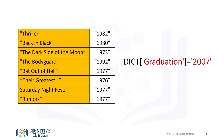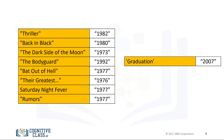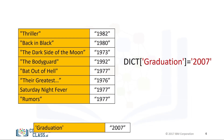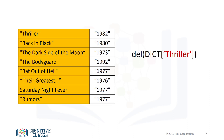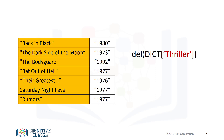We can add a new entry to the dictionary — this will add the value 2007 with a new key called 'Graduation'. We can delete an entry as follows — this gets rid of the key 'Thriller' and its value.